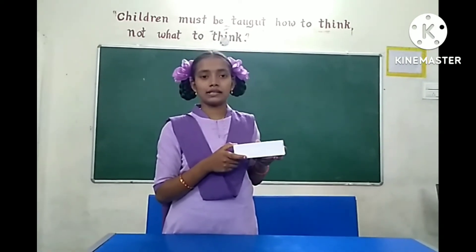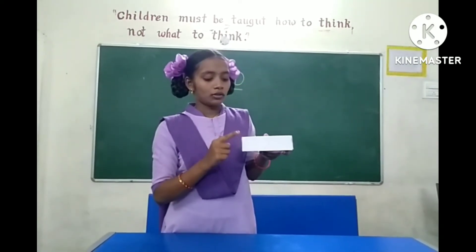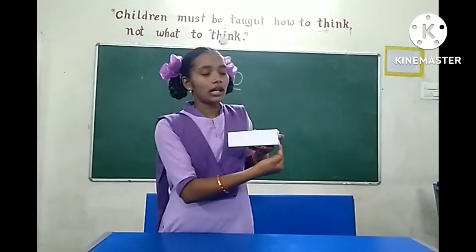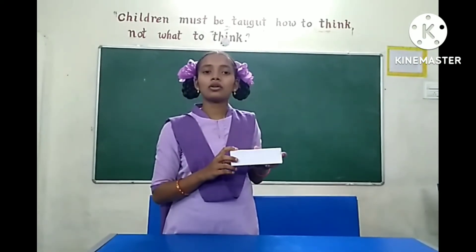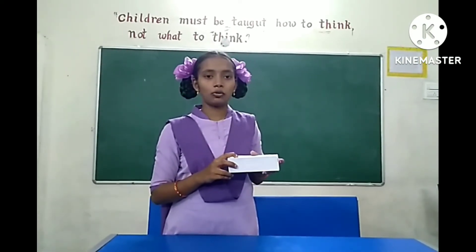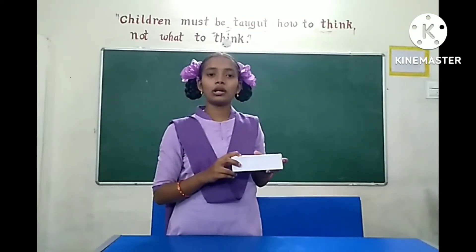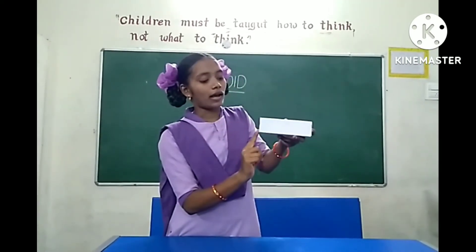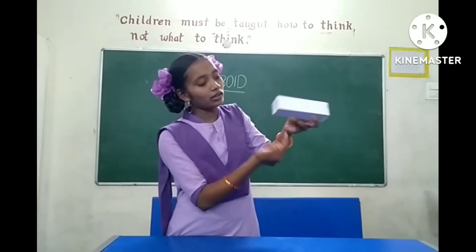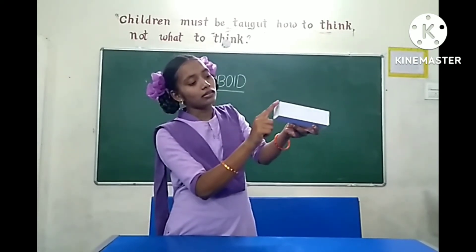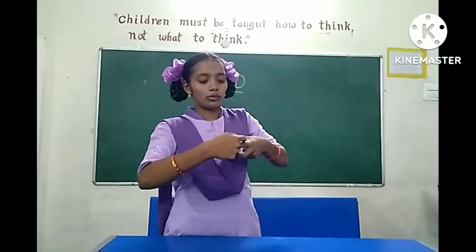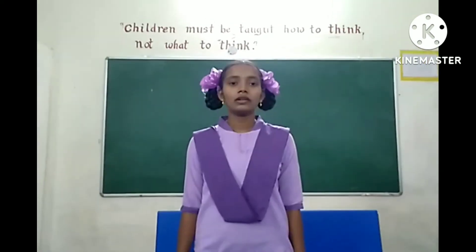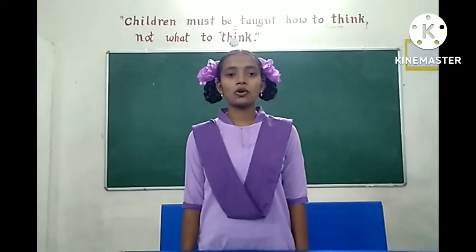Cuboid has eight vertices — counting 1 through 8. The corners are called the vertices of the cuboid. Cuboid has 12 edges — counting 1 through 12. The lines are called the edges of the cuboid.